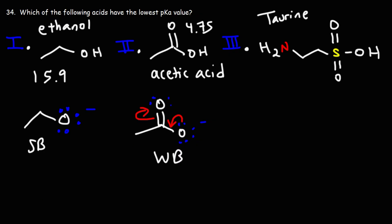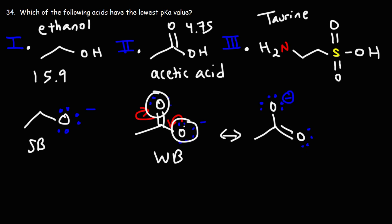We can draw the resonance structure of acetate by taking a lone pair, forming a pi bond, and breaking the original one. In the resulting resonance structure, notice that the negative charge is delocalized — shared among the two oxygen atoms. It's not localized on one oxygen atom. In ethoxide, the negative charge is stuck on a single oxygen atom. In acetate, the negative charge and electrons are free to move, delocalized over that region.